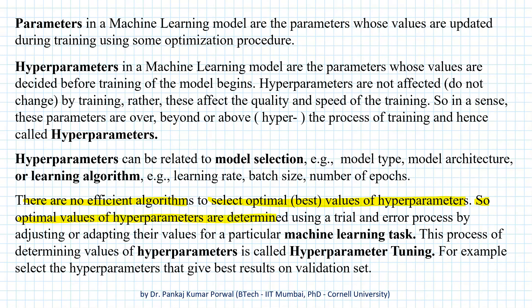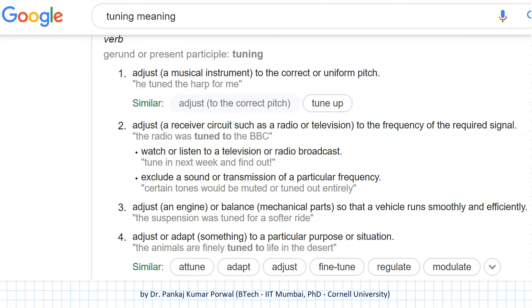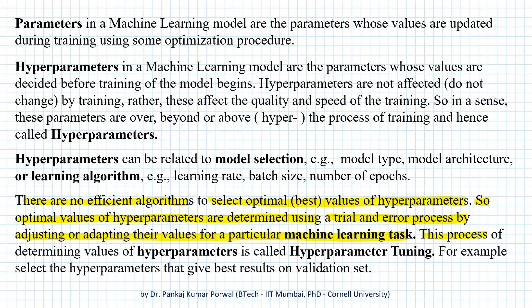So the optimal values of hyperparameters are determined using a trial and error process by adjusting or adapting their values for a particular machine learning task. And if we again ask Google what is the name for adjusting or adapting something to a particular purpose or situation, Google says it is 'tuning'.